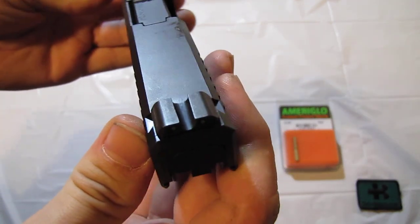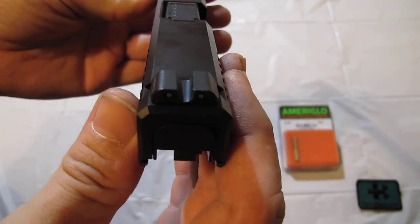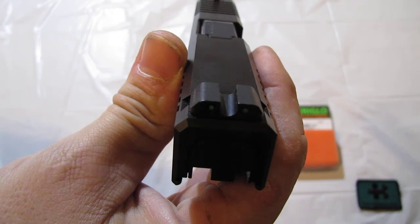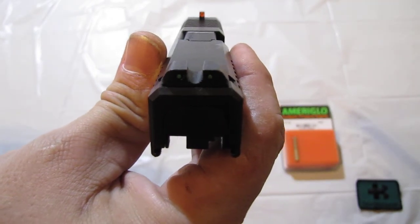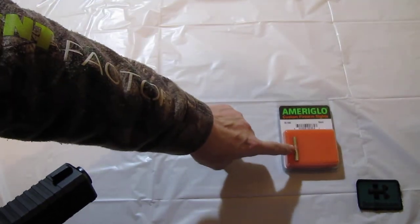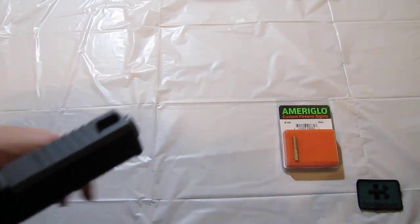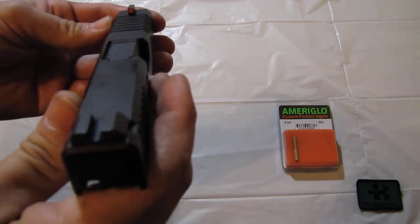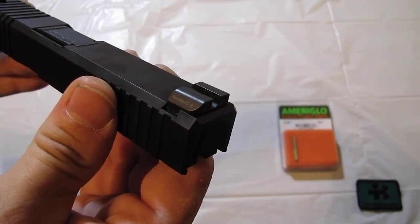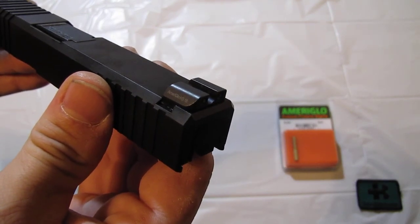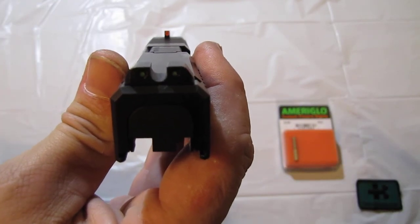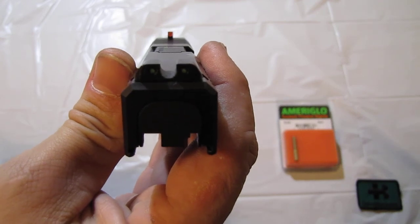The mounting is somewhat a procedure that you need to have a sight tool because those are tritium sights. The front sight can be easily mounted with the delivered tool that comes with the packaging. The rear sight should be best mounted using a Glock or any other sight tool. Because it has tritium in it you cannot simply hammer it in place. It may damage the glass capsule of the tritium.